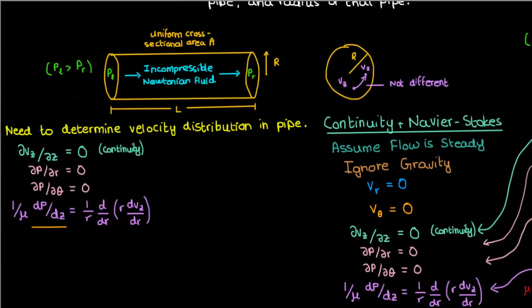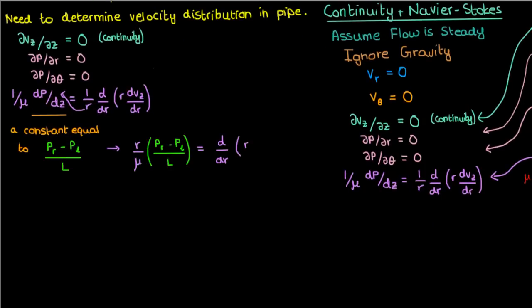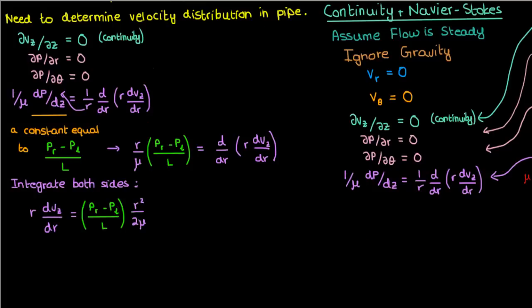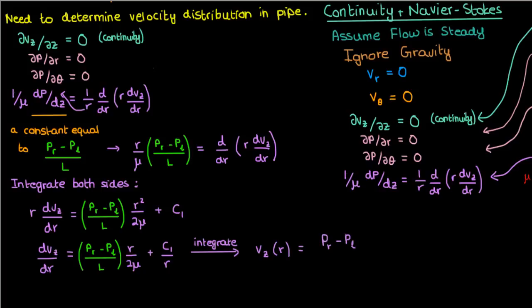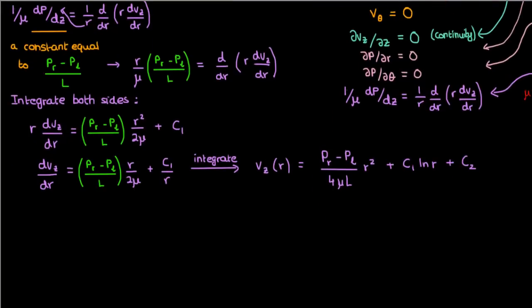Now, this pressure gradient in the z direction looks a bit annoying, but what we can do here is assume that it's a constant equal to PR minus PL over L, which is an assumption that experiments agree with. So let's start solving this ODE by multiplying both sides by R and integrating both sides. In that case, we'll have R dvz by dr equals R squared over 2 mu times PR minus PL over L plus C1, where C1 is a constant of integration. Now, if we divide both sides by R and integrate that, we'll end up with an expression for vz as a function of R, given by vz of R equals PR minus PL over 4 mu L times R squared plus C1 ln R plus C2, where C2 is another constant of integration. Now, the question remains, how do we find C1 and C2?